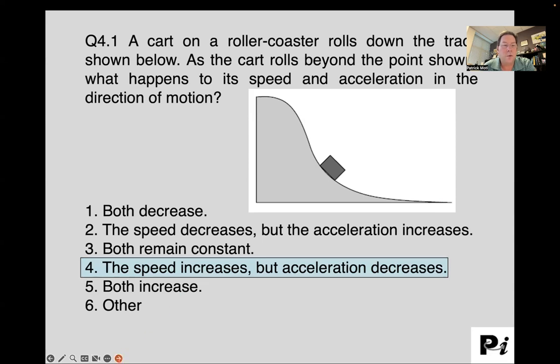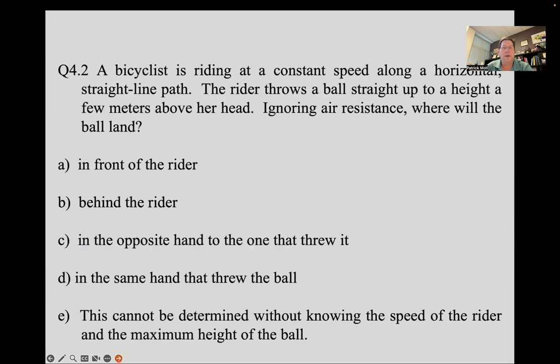All right, let's try another one that is important for thinking about two-dimensional motion. You're a bicyclist, you're riding at a constant speed along a horizontal straight line path. You throw a ball straight up to a height that's a few meters above your head. Ignore air resistance.